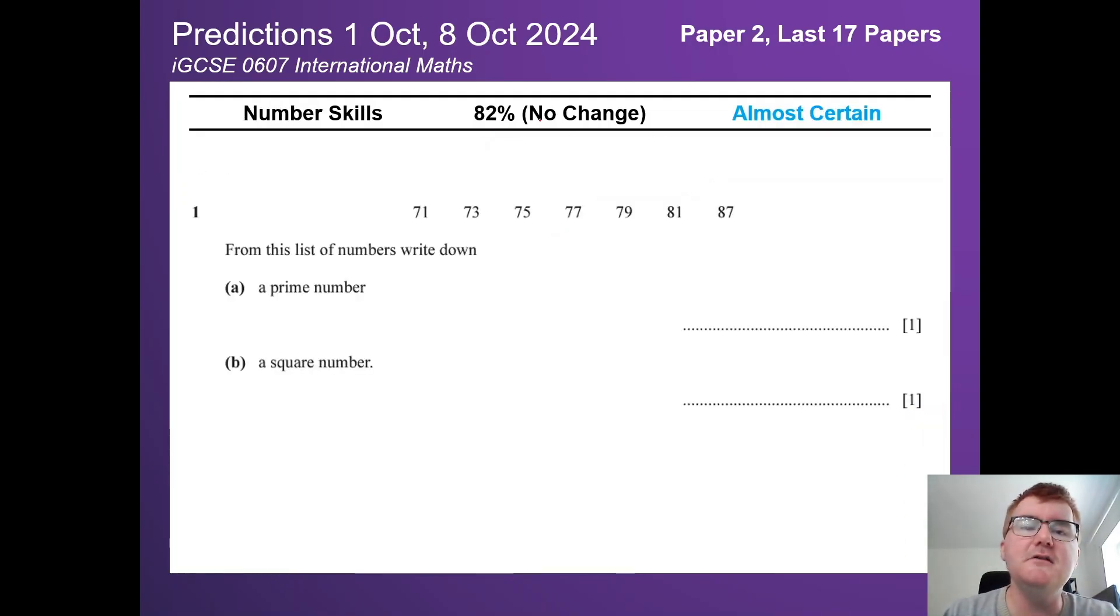On to number skills, no change at 82%, in the almost certain category. Usually one of the very first questions to appear. This is very typical: you have a list of numbers and you need to work out what the prime numbers are, or the square numbers are, or some other feature.